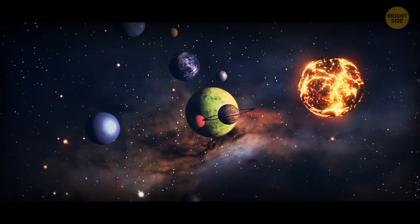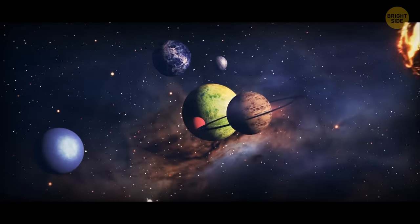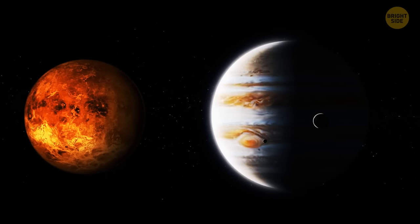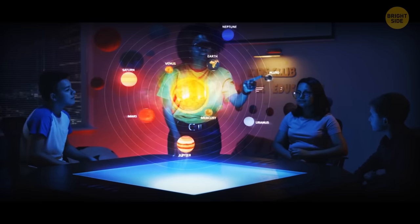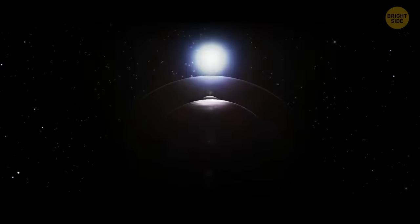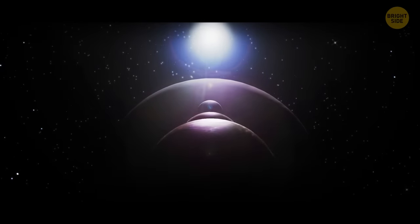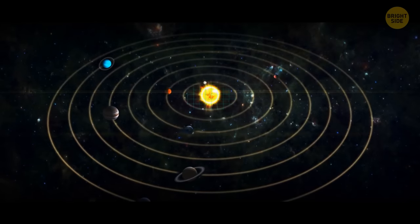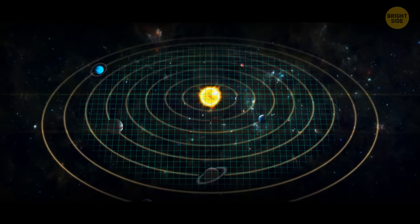And that's a wrap on the wacky world of planet rotations. From the lightning-fast spin of Jupiter to the bizarre backwards rotation of Venus, it's clear that our solar system is full of surprises. But thanks to the laws of physics and the gravitational pull of the Sun, these planets continue to spin on, keeping time with the steady beat of the cosmos. Stay tuned!